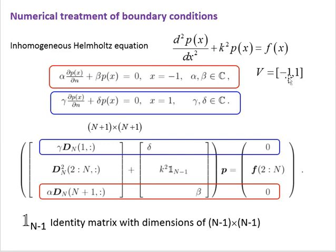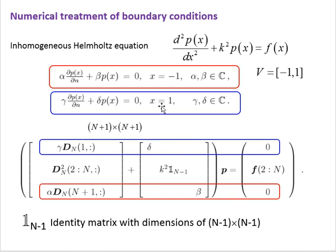We apply this boundary condition on the right and left of the reference domain. To represent the differential equation as a matrix system A·X = B, the second derivative is represented by D-squared. K-squared, the wave number, is multiplied by the identity matrix of dimension (N+1)×(N+1). The first and last rows are reserved for boundary conditions.